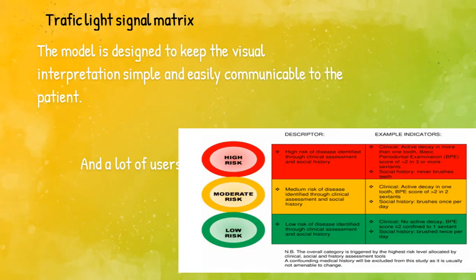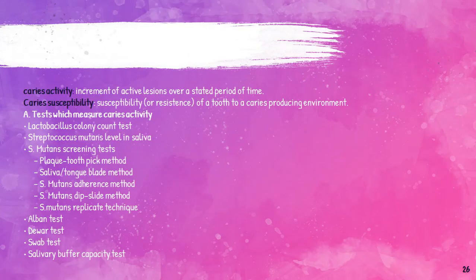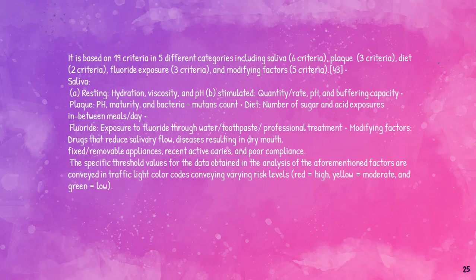Another model is the Traffic Light system, which is followed in Australia. This system consists of 5 different categories. Unstimulated resting saliva less than 0.1 ml is considered high risk, determined by the red light. Stimulated saliva less than 0.7 ml is also considered high risk. The range of 0.7 ml and above is considered low risk, indicated by green, while the moderate risk category is indicated by yellow.